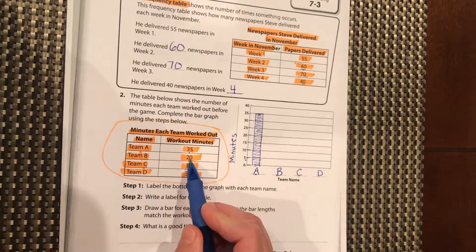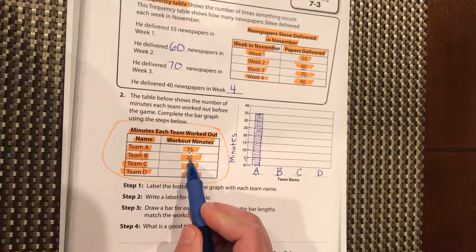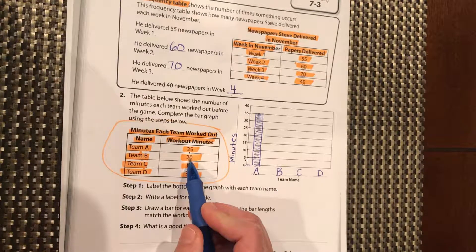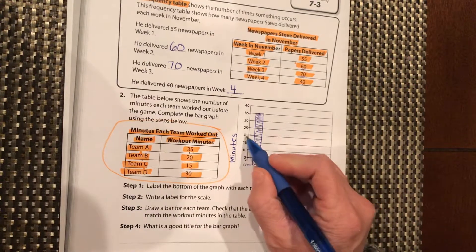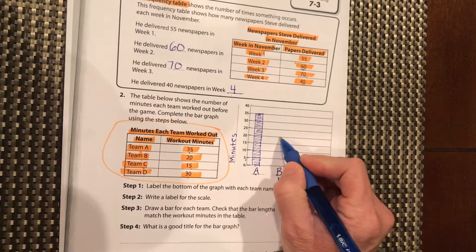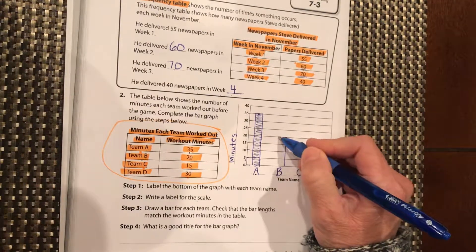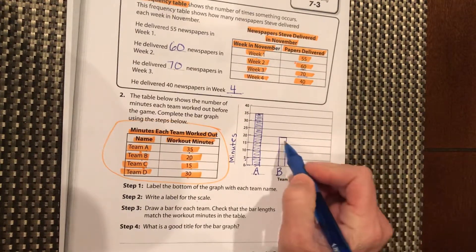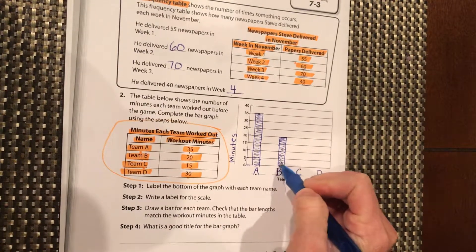Team B was 20 minutes. I want you to pause it and draw the bar for team B. You should come up to 20. It should go right to here. It should be the top. Fill it in like that.